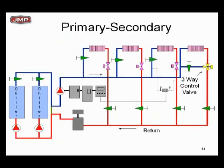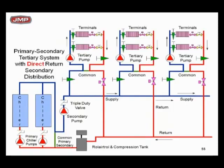Here's a typical primary-secondary system. We've got a dedicated pump for a chiller at constant flow. Again, see the common pipe, and you've got a little secondary pump with two-way valves. Primary-secondary: the secondary is variable flow, the primary is constant flow.